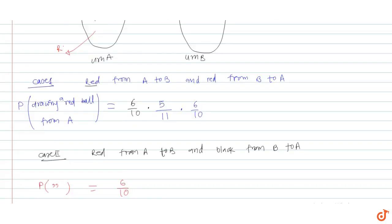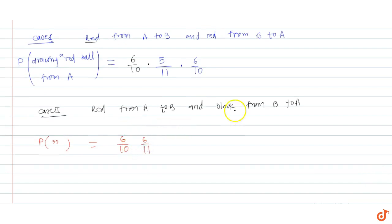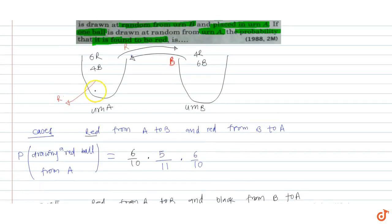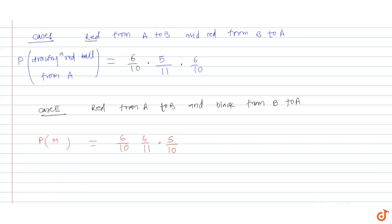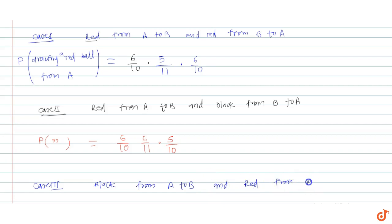Now considering the cases with a black ball: if we have a black ball transferred and the resulting composition is 5 red and 5 black, so 5 red out of 10 total balls. Case 3 is: black from A to B, and then red from B back to A.